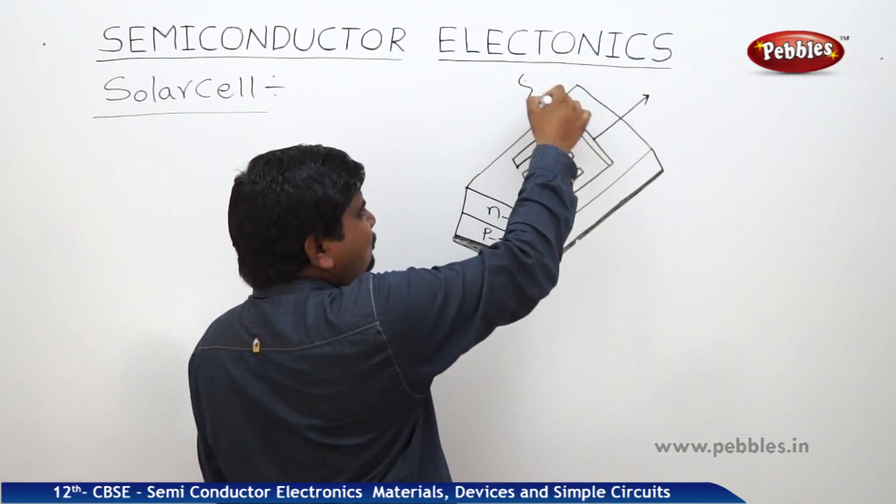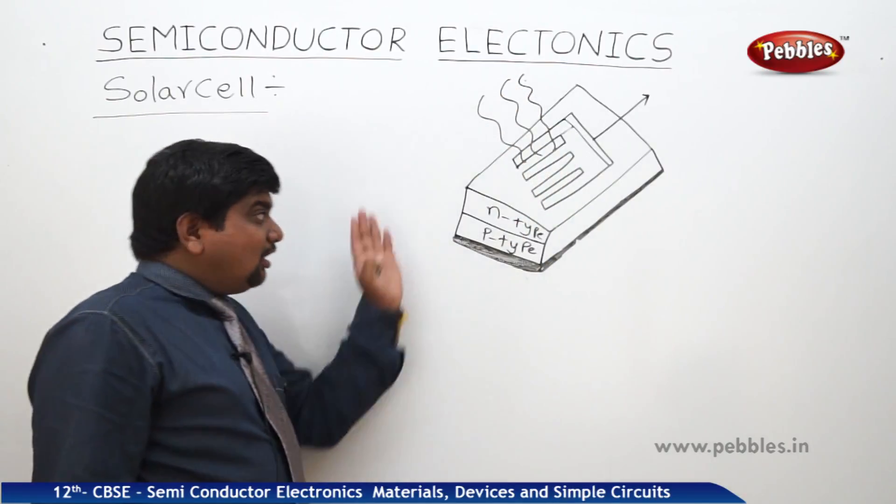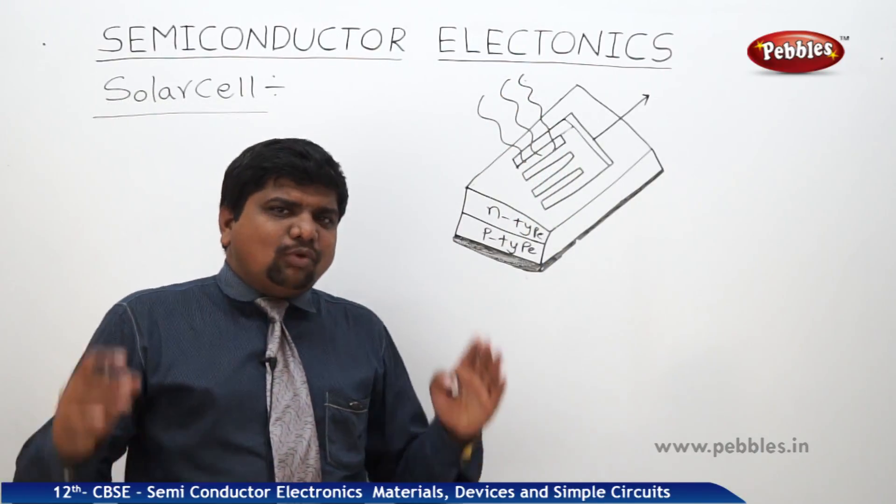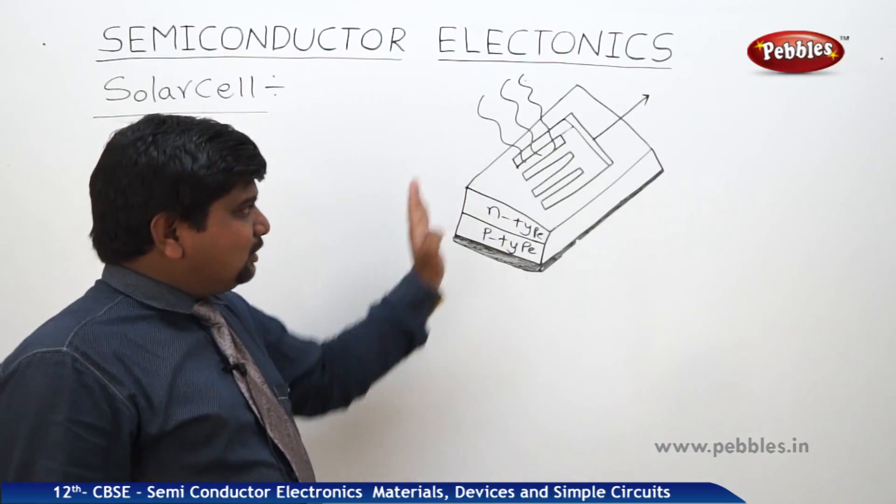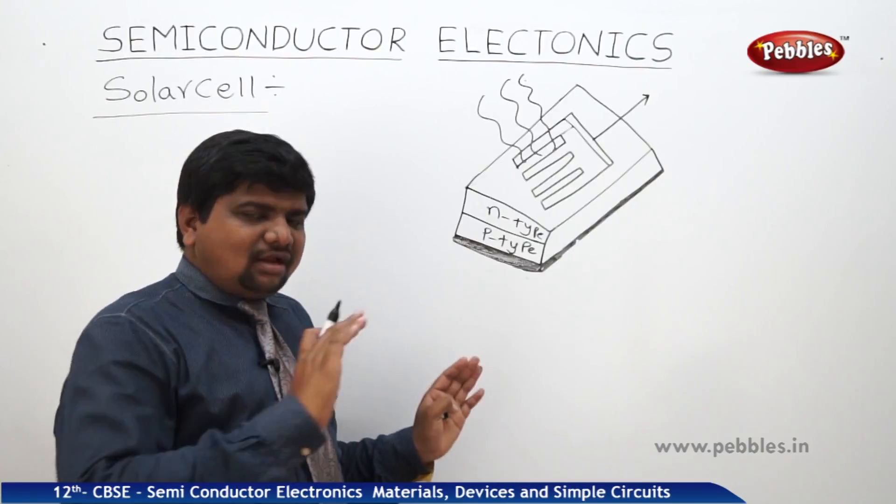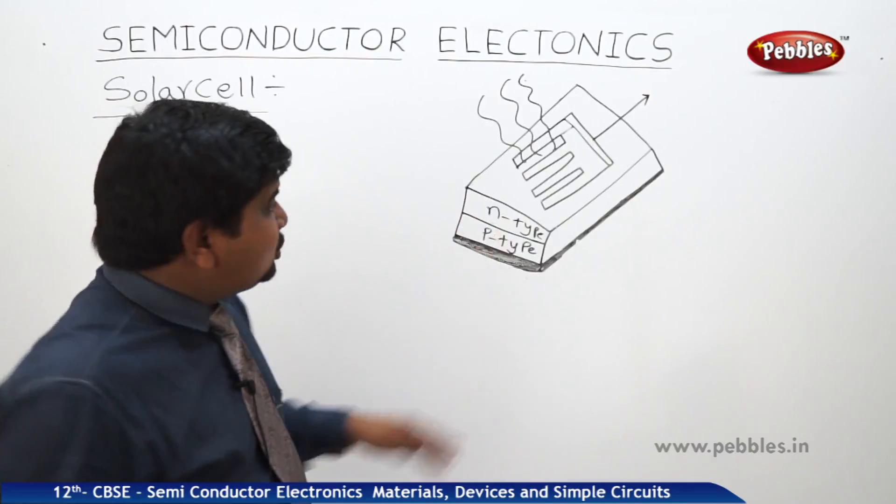So, the sunlight, not only sunlight. Solar cell means everyone thinks that sunlight should fall on the top surface. Sunlight has more intensity. The quick reaction takes place. Because of that, we are using the sunlight. If the sunlight is not available, we can use any source of light which can emit the photons.